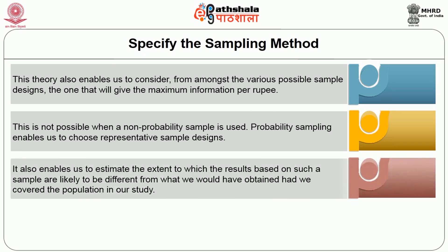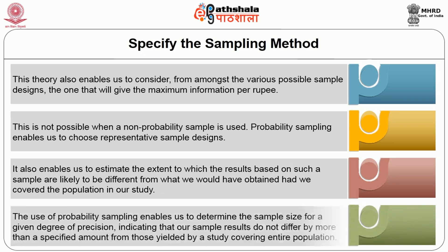Probability sampling enables us to choose representative sample designs and estimate the extent to which results based on such a sample are likely to differ from what we would have obtained had we covered the entire population. It also enables us to determine the sample size for a given degree of precision, indicating that sample results do not differ by more than a specified amount from those yielded by a study covering the entire population.